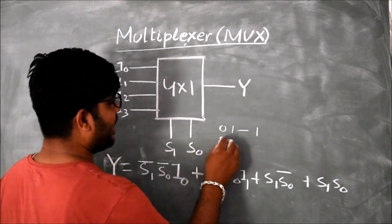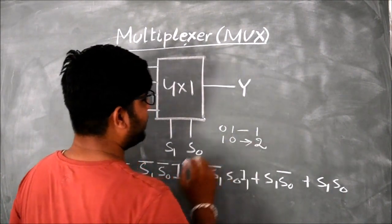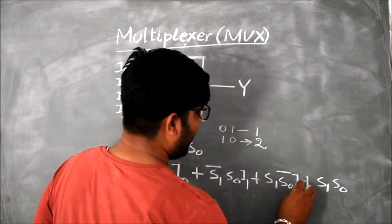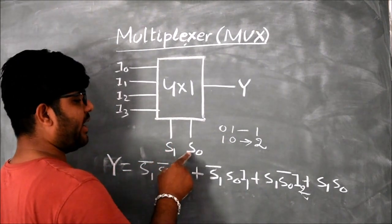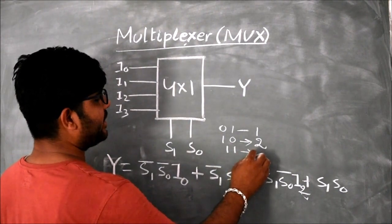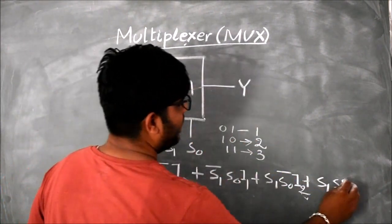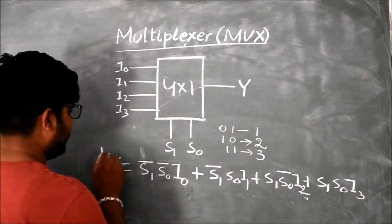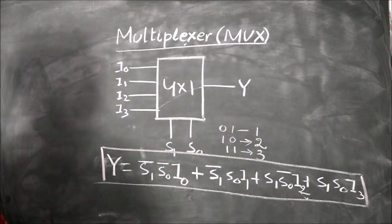When I take S1 and S0 as 1, 0, the binary representation of 2 is 1, 0, so I2 is routed to Y. Here I can write I2. And I3 is routed to Y, here I can write I3. So this is the expression for a 4 cross 1 multiplexer.